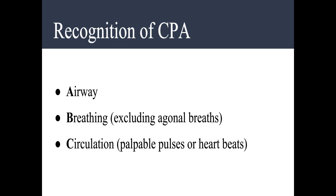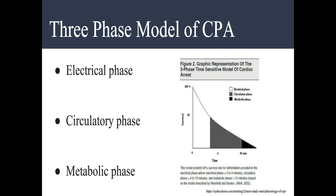In people, a three-phase model of cardiopulmonary arrest is described, and treatment is based on the phase in which a patient is classified. The first phase is the electrical phase, covering the first four minutes after arrest. It is characterized by minimal ischemia. In this phase, if a patient has a shockable rhythm — such as pulseless ventricular tachycardia or ventricular fibrillation — defibrillation is the most important treatment and can be initiated without prior chest compressions.